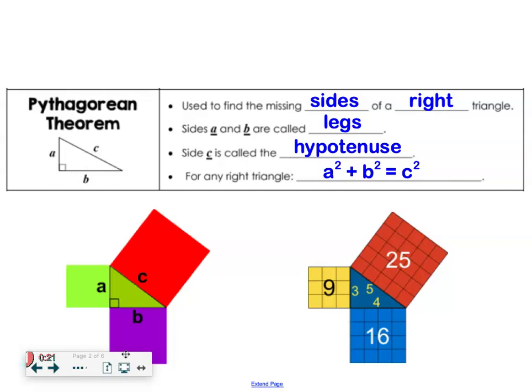So we already know this. You can use the Pythagorean theorem to find sides of a right triangle. We know it needs to be right. Sides a and b are called the legs. And c is your hypotenuse. Again, this is kind of all information we already know. And we know that a squared plus b squared equals c squared.